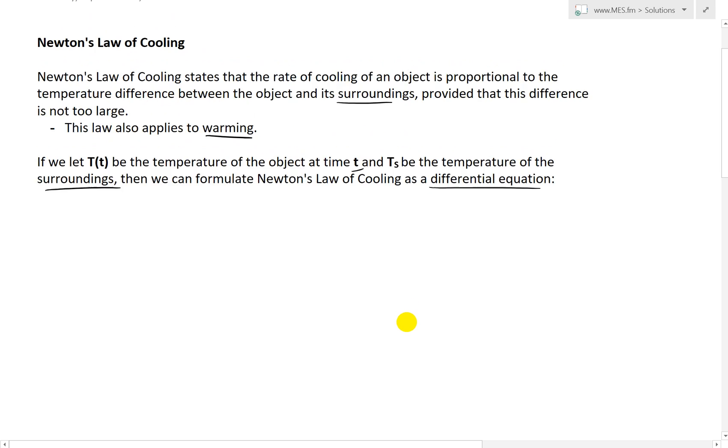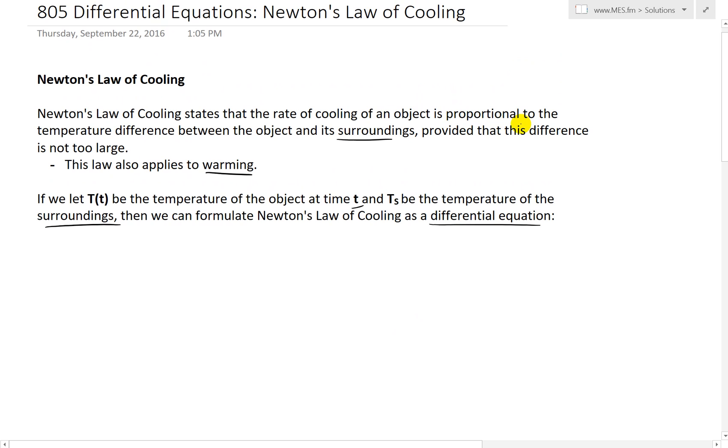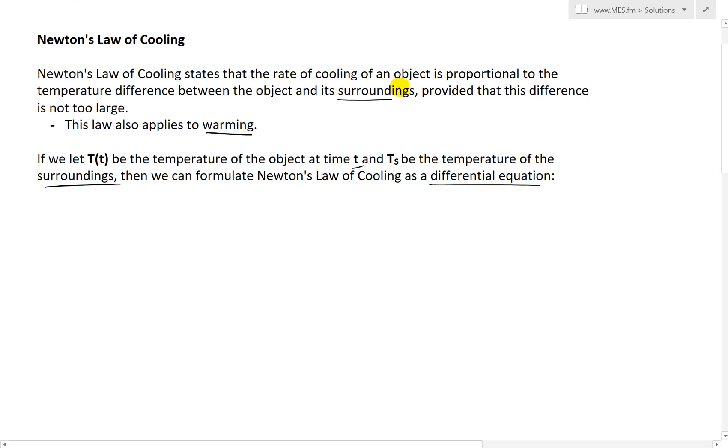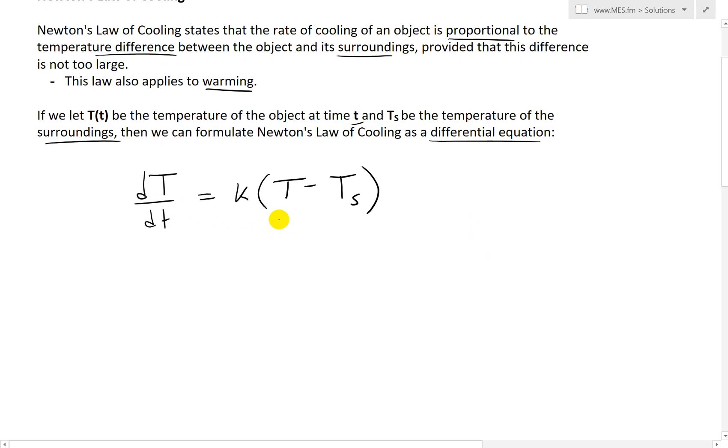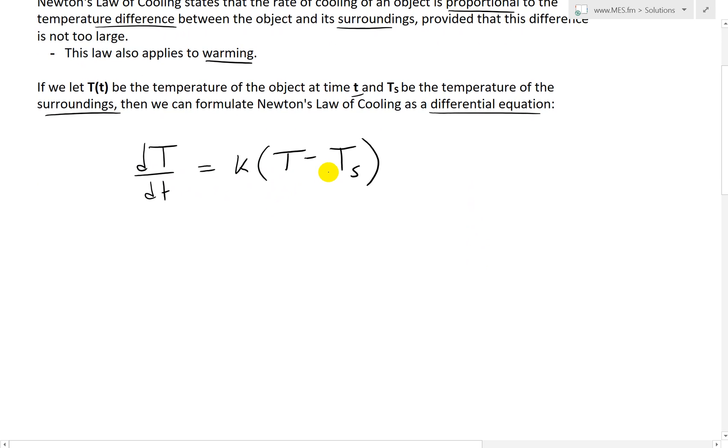As I went over in my earlier videos, whenever you have something proportional to something else, in this case the rate of cooling or warming, the rate is just the derivative, so dT over dt. Basically, the rate of temperature change equals a proportionality constant K multiplied by the difference of the temperature at time t minus the surrounding temperature. So the rate of cooling or warming equals K times the difference in temperature.